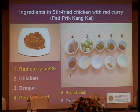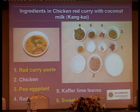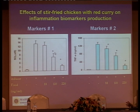This is the ingredient in gang-gai. It has red curry, chicken, pea eggplant, red chili, kaffir lime leaf, and sweet basil. The result shows that the ready-to-eat stir-fried chicken with red curry shows the same result that occurs with the individual and mixed spice.